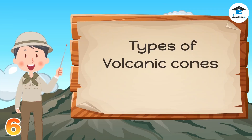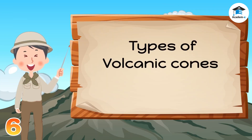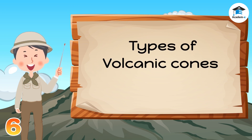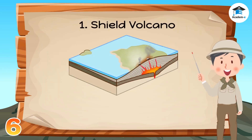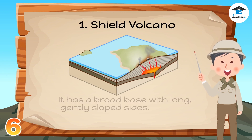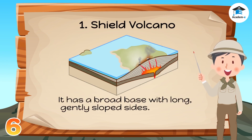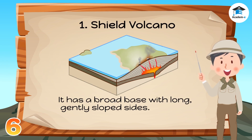The type of cone depends upon the chemical and physical nature of the materials expelled. There are three types of volcanic cones. The first is the Shield Volcano. It has a broad base with long, gently sloped sides. The cone is made up purely of lava that has poured out and solidified during a mild or quiet eruption.